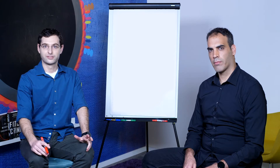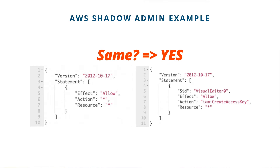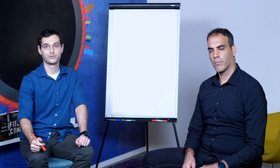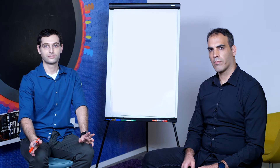Shadow admins are stealthy admins that many organizations don't realize they have. An example of a shadow admin could be a user that two years ago needed a permission to create an AWS access key for a new service integrated with the environment. But since then, the AWS environment became a production one, and of course no one remembered to remove this sensitive create access key permission from the original user's role. The create access key permission is equivalent to having all 5,000 permissions available on AWS when assigned without any conditions or restrictions.